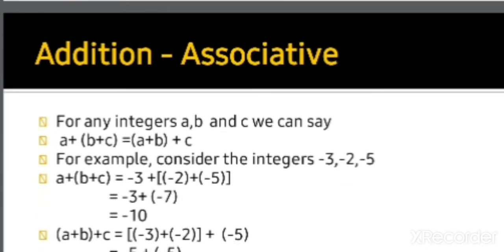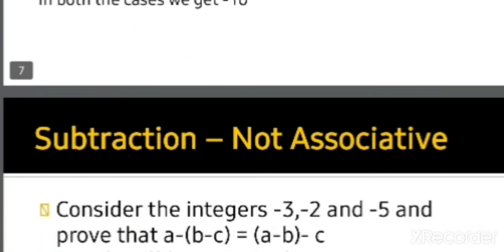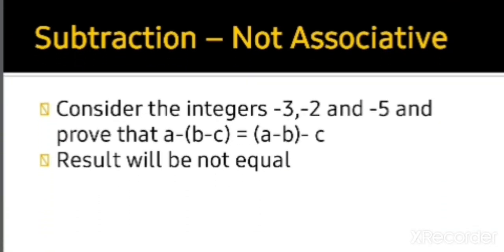Addition is associative. For any integers a, b, and c, a plus (b plus c) equals (a plus b) plus c. For example, consider minus 2, minus 3, and minus 5. Substituting, a plus (b plus c) equals minus 10, and (a plus b) plus c also equals minus 10. In both cases we get minus 10, so addition is associative.